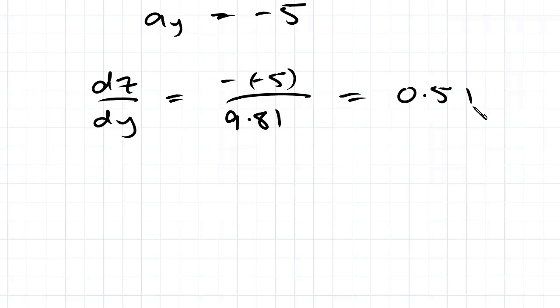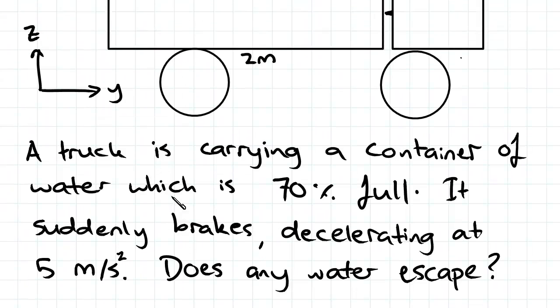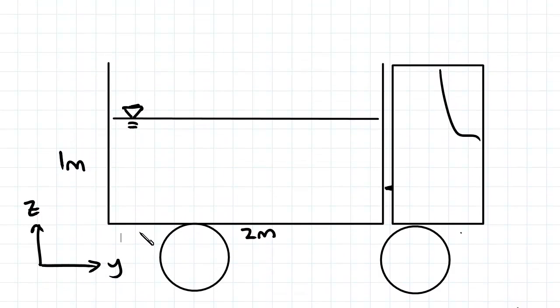Now we need to find what dz and dy are. Because the truck is decelerating, we expect the fluid to bunch up at the front of the truck. If you think of braking in a car, you're thrown forward when someone slams on the brake - same thing applies for fluids. The surface of the fluid will tilt and bunch up at the front.